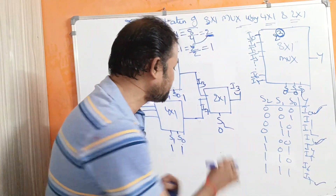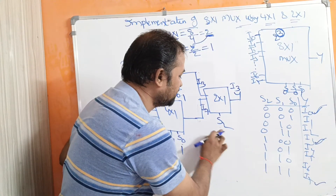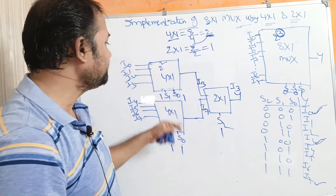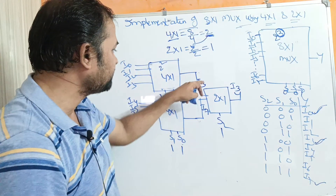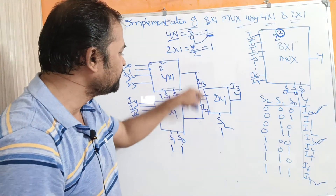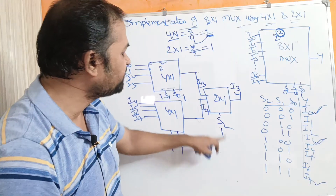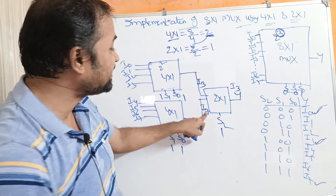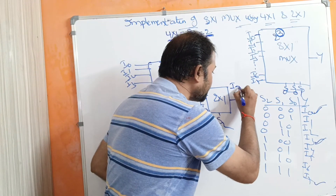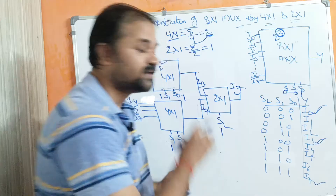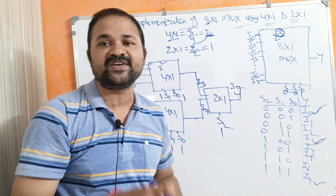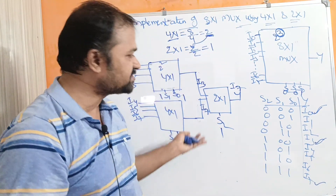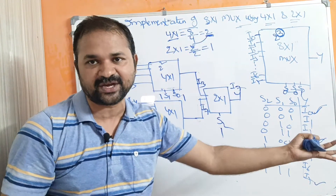Finally, let's check for S2=1, S1=1, S0=1 (triple 1, selecting I7). With S1 and S0 both 1, the first multiplexer outputs I3 and the second multiplexer outputs I7. Since S2=1, the 2 by 1 multiplexer selects the second data input, which is I7. We can conclude that our logical circuit is correct, as it produces the expected truth table.